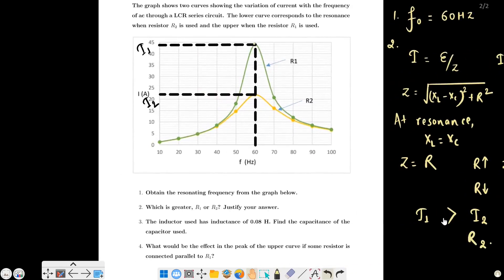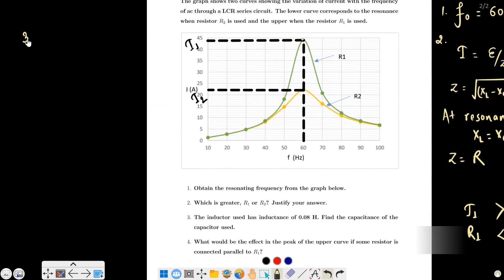Question three: the inductor has inductance of 0.08 Henry. Calculate the capacitance. Resonant frequency equals 1 over 2 pi root LC. Resonant frequency is 60 Hz, so 60 equals 1 over 2 pi root of 0.08 into C. Solve for C.